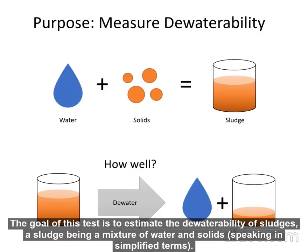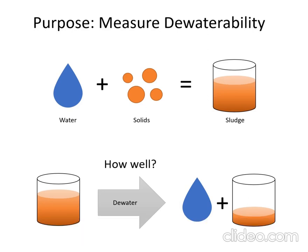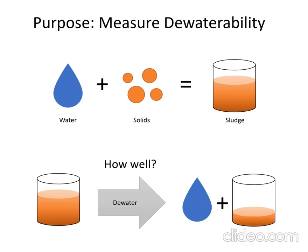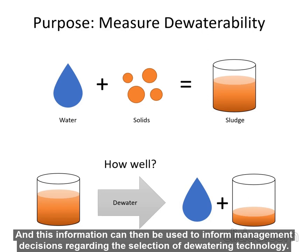The goal of this test is to estimate the dewaterability of sludges — a sludge being a mixture of water and solids, speaking in simplified terms. We want to measure how well a sludge can be dewatered, and this information can then be used to inform management decisions regarding the selection of dewatering technology, for example.